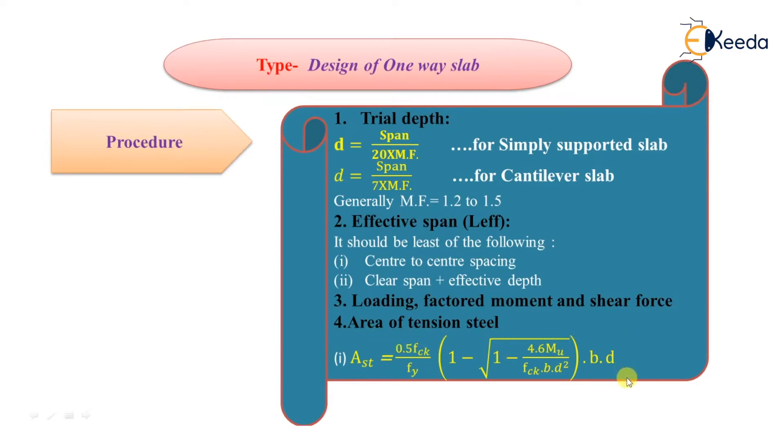You have to remember this formula: AST equals 0.5 FCK upon FY in bracket 1 minus under root 1 minus 4.6 MU upon FCK BD square into B into D.